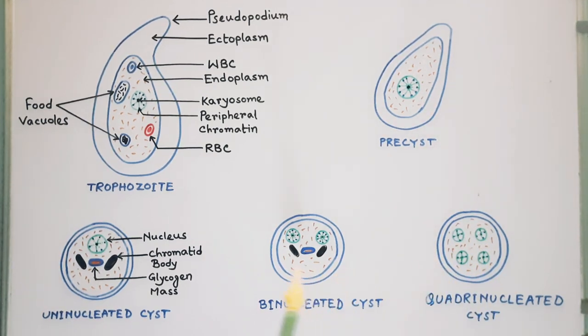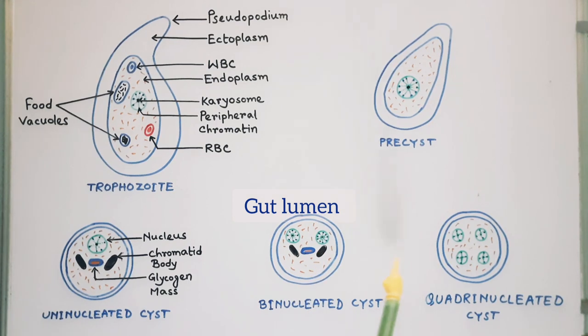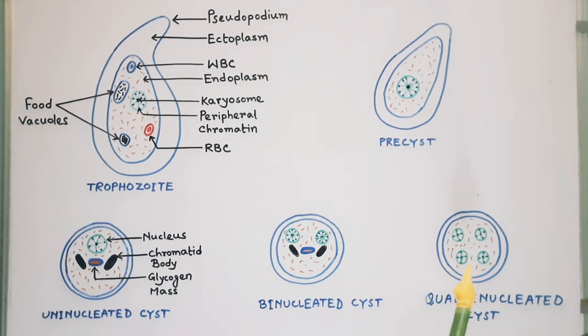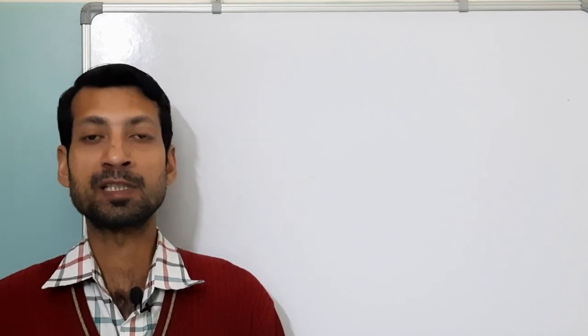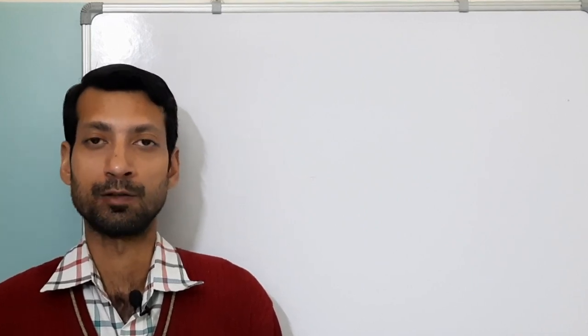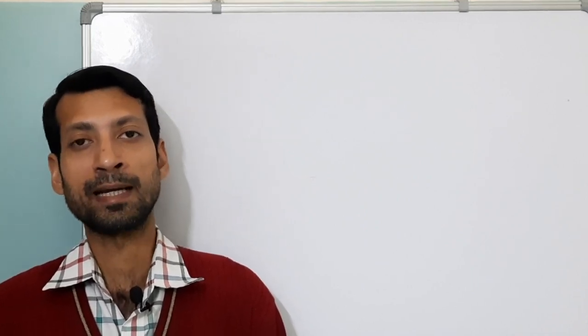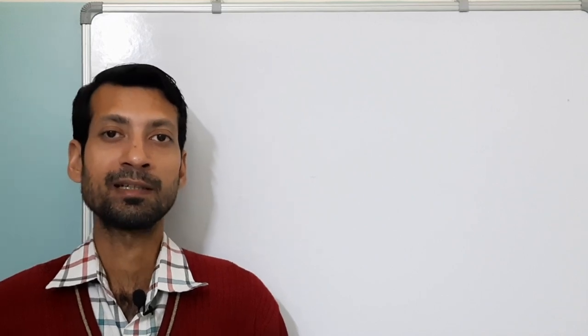The cysts are present only in the gut lumen. This is all about the habitat, epidemiology and morphology of Entamoeba histolytica. If you have any query, please comment. Share the video if you like, and subscribe to the channel for more upcoming videos. Stay with us, keep watching — thank you.